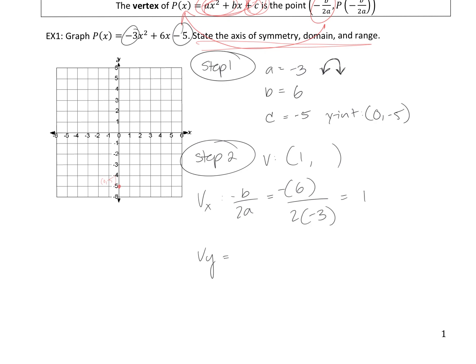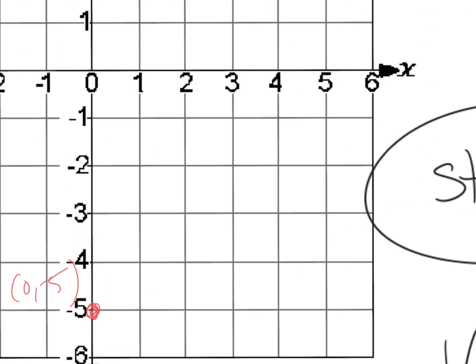So my x value is 1. To find the y value, we use our original function and plug in x equals 1 wherever we see x. Negative 3 times 1 squared plus 6 times 1 minus 5 gives us v sub y equals negative 2. So the vertex is (1, negative 2). I'll go ahead and label it v on the graph.